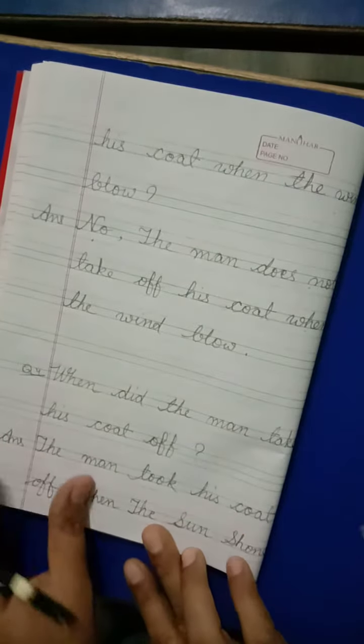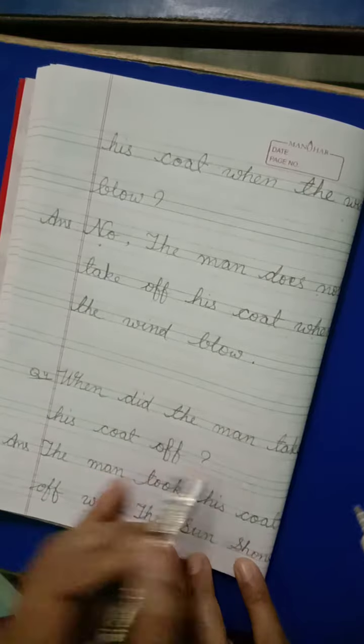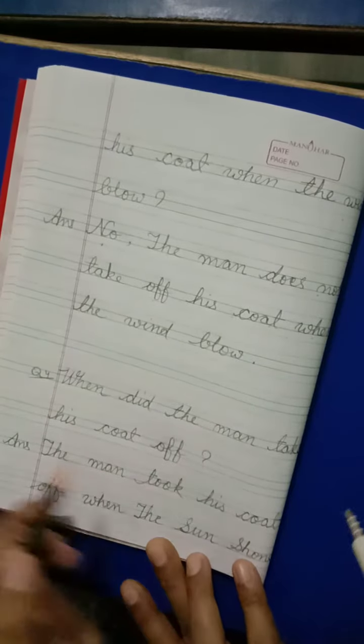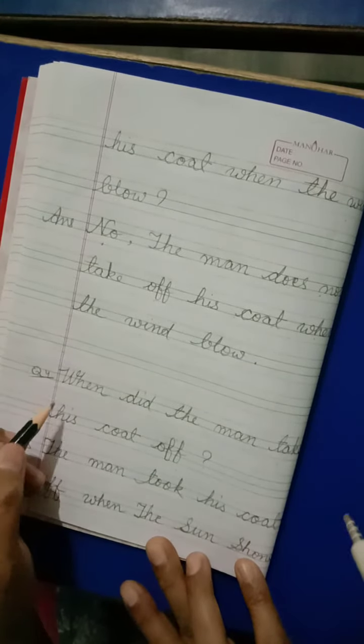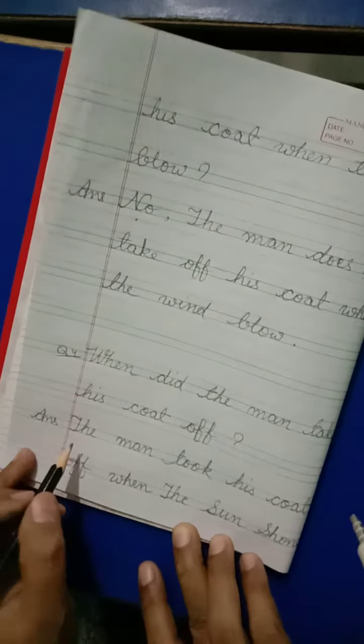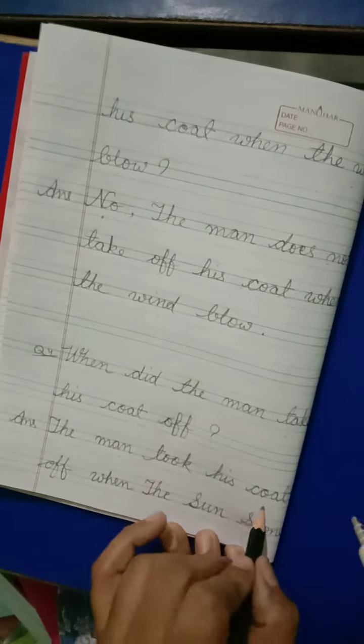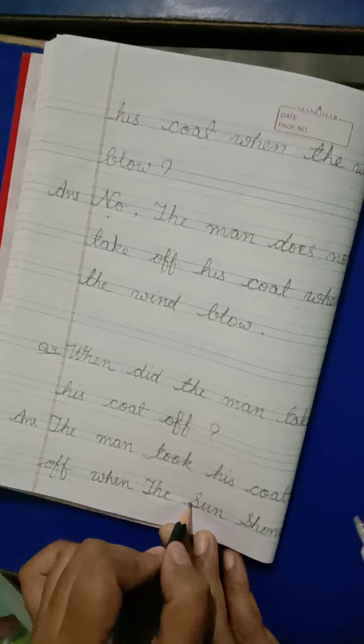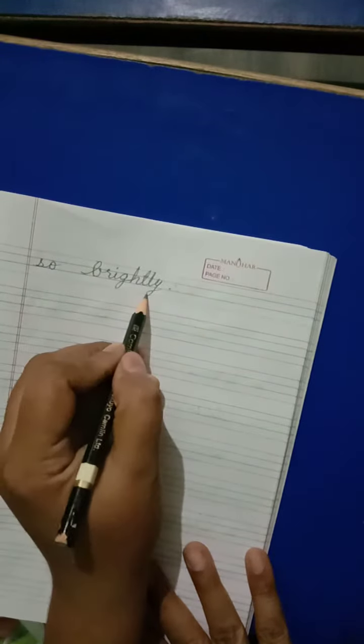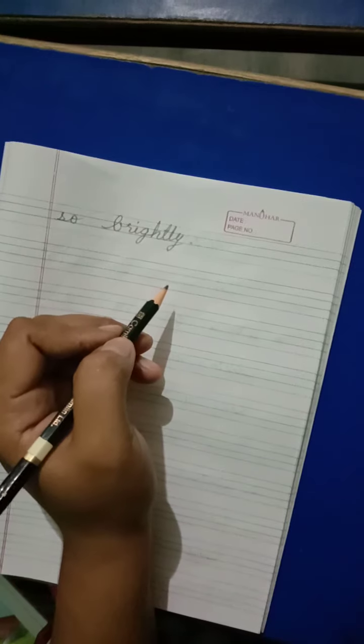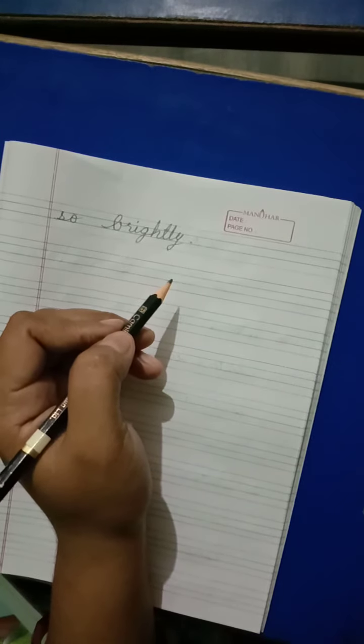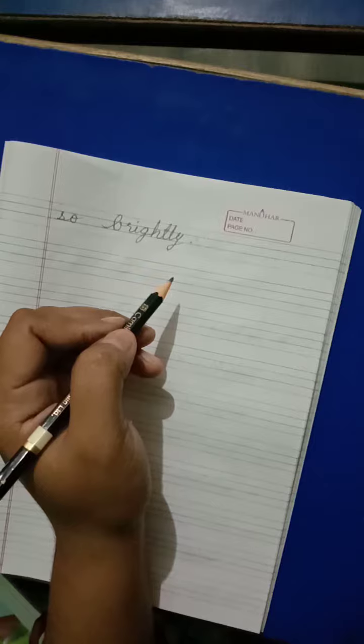Now next question is third. When did the man take his coat off? तो में ने कब अपना coat उता रहा था? The man took his coat off when the sun shown so brightly. जब सन अपनी तेज रोशनी उस पर डाल रहा था, तब उसको गर्मी लगी और उसने अपना coat निकाल दिया.